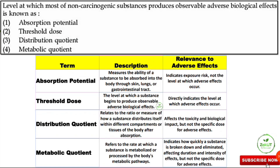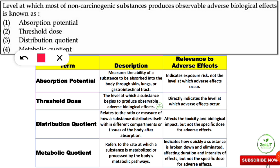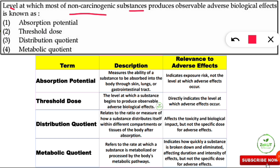As usual, we will learn a concept through a previous year question. This question is from environmental toxicology — a topic some students find boring, but don't worry, we'll cover it with short notes. The question reads: the level at which most non-carcinogenic substances produce observable adverse biological effects is known as what? The options are: absorption potential, threshold dose, distribution quotient, or metabolic quotient.